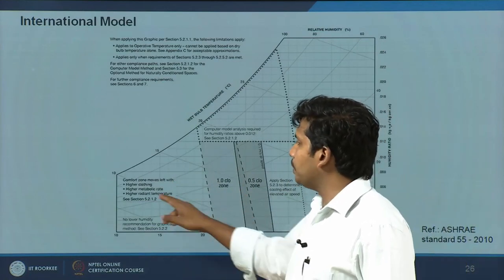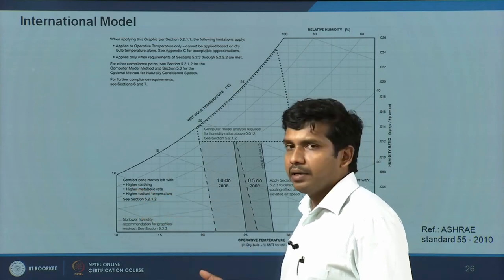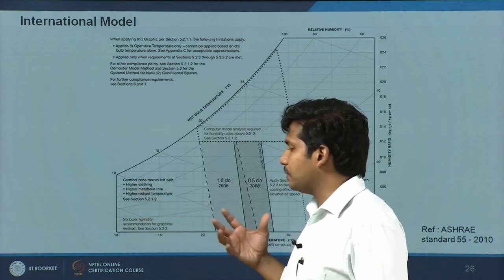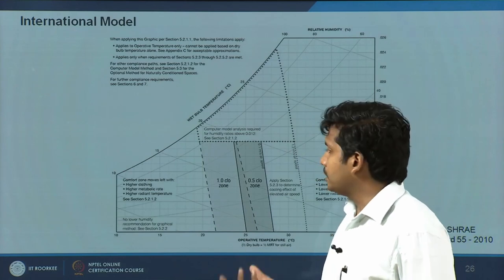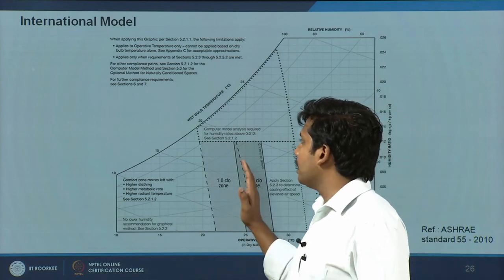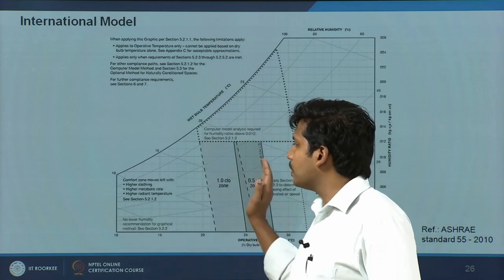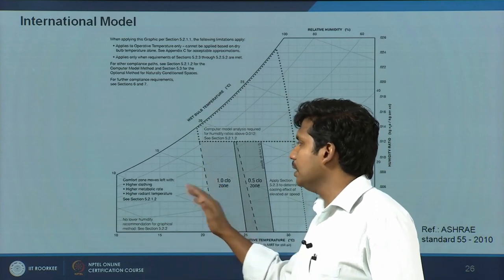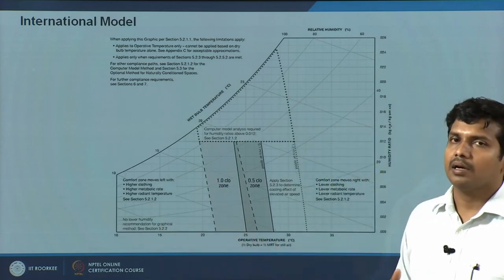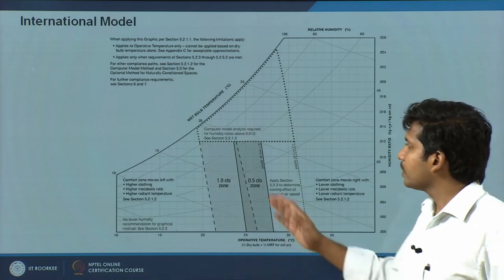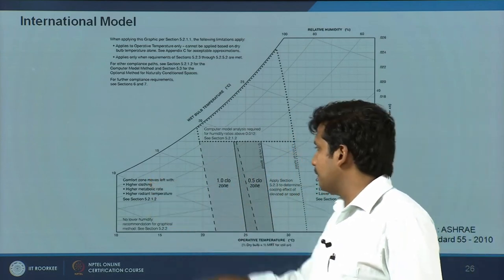When you are doing higher metabolic rate activity — more strenuous physical activity instead of sedentary — your comfort zone will move towards the left, apart from clothing insulation. Similarly, when you have a higher radiant temperature — MRT or globe temperature is getting higher — your comfort zone will also move towards the left.